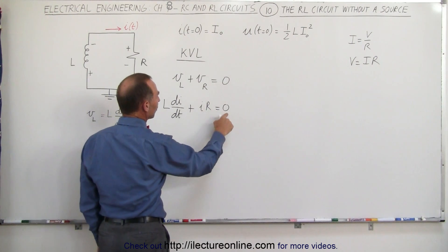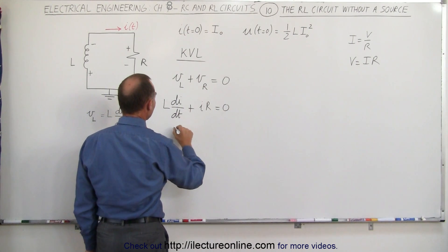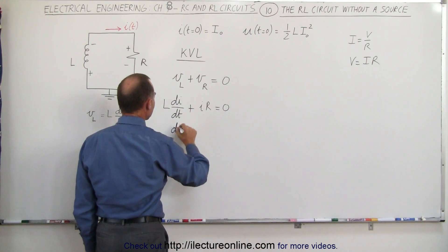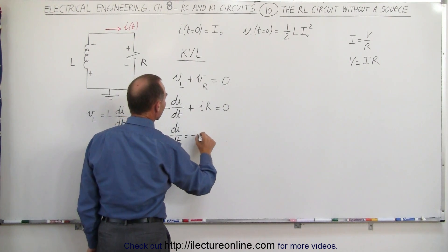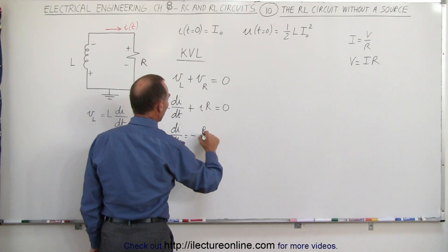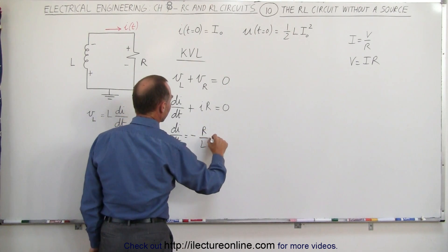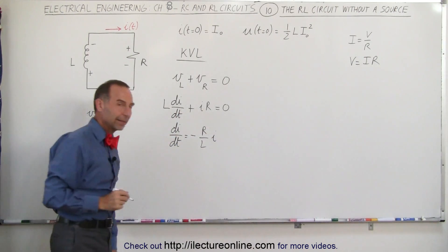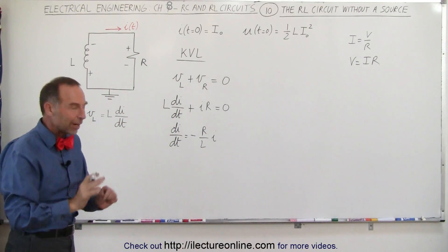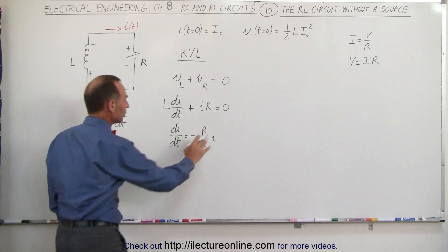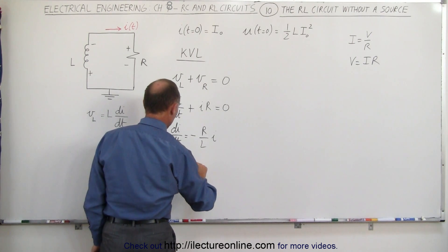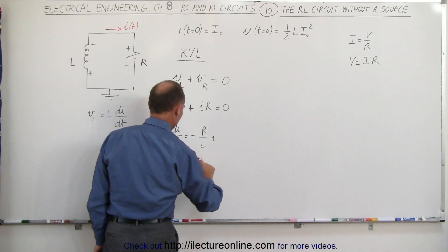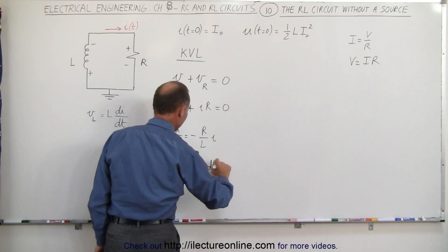Moving this term to the right and dividing both sides by L, we get di/dt is equal to minus R over L times the current I. Then, separating the variables — putting I on one side and t on the other — we get di over I is equal to minus R over L times dt.